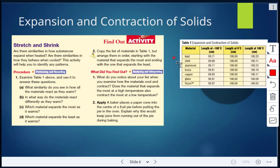We have lead, steel, aluminum, brass, copper, glass, and pyrex. We have the length at minus 100 degrees Celsius in centimeters, then the length at zero degrees Celsius, and then the length at 100 degrees Celsius. We're looking at similarities that we see when the materials react as they get warmer. What do you observe in this chart with those materials?